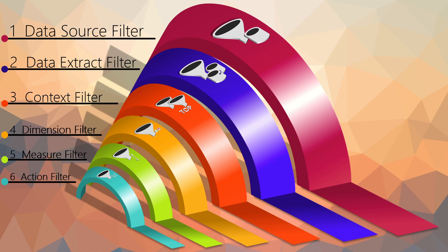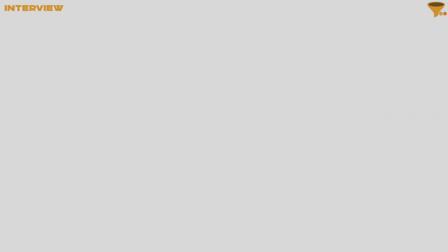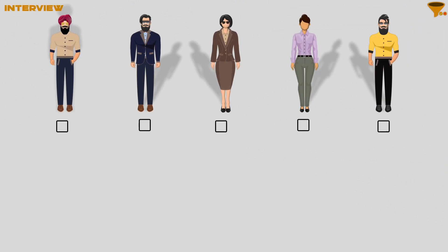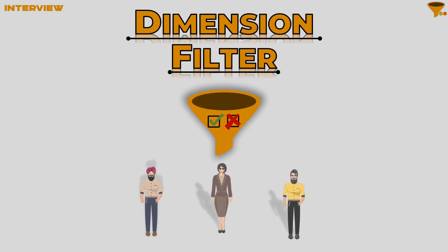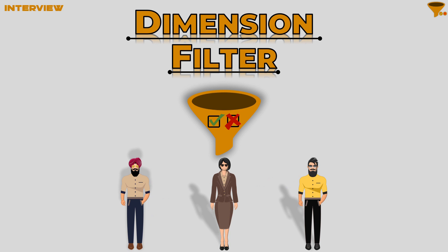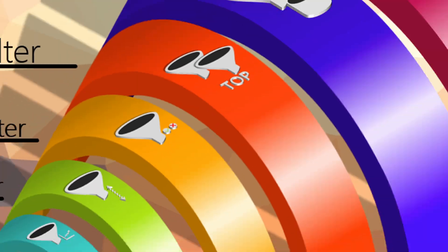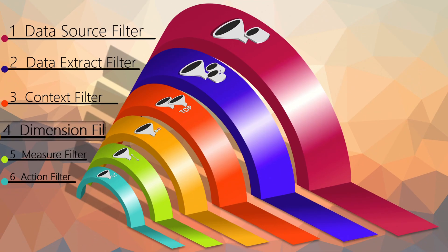After checking regional candidates, there is an SSB or interview round where many questions are asked and candidates give correct or incorrect answers. All those who gave correct answers are selected for the next round. This interview round is just like the dimension filter, where discrete values of yes and no are checked and those who gave correct answers are selected — similar to how dimension filter works in Tableau.